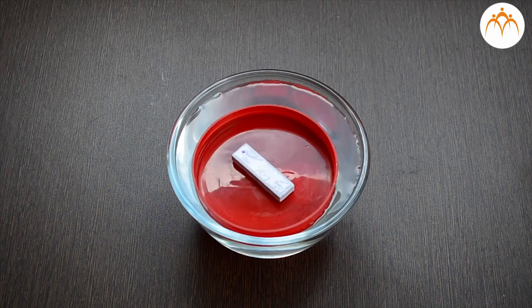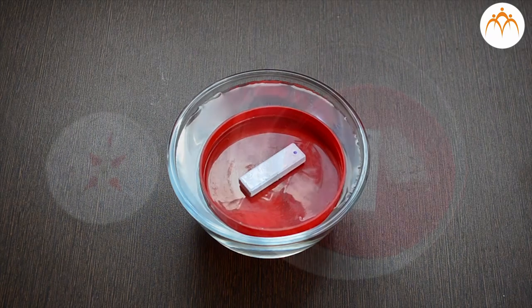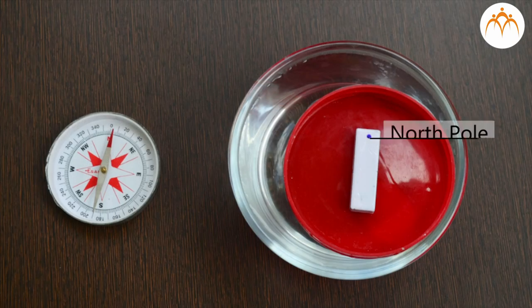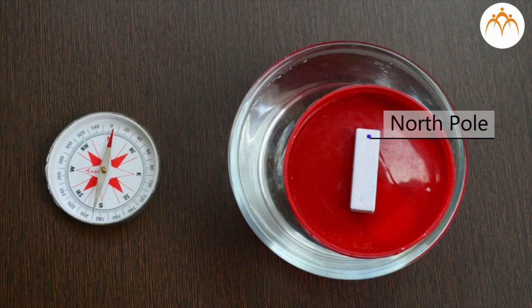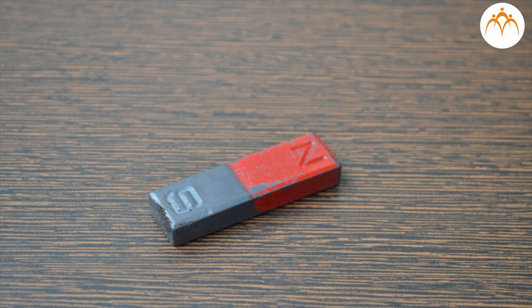Coming back to our bar magnet, we will call this end marked with dot as north pole as it is pointing in the north direction and the other end south pole as it is pointing in south direction. For convenience, some magnets are marked with capital N for north pole and later capital S for south pole.